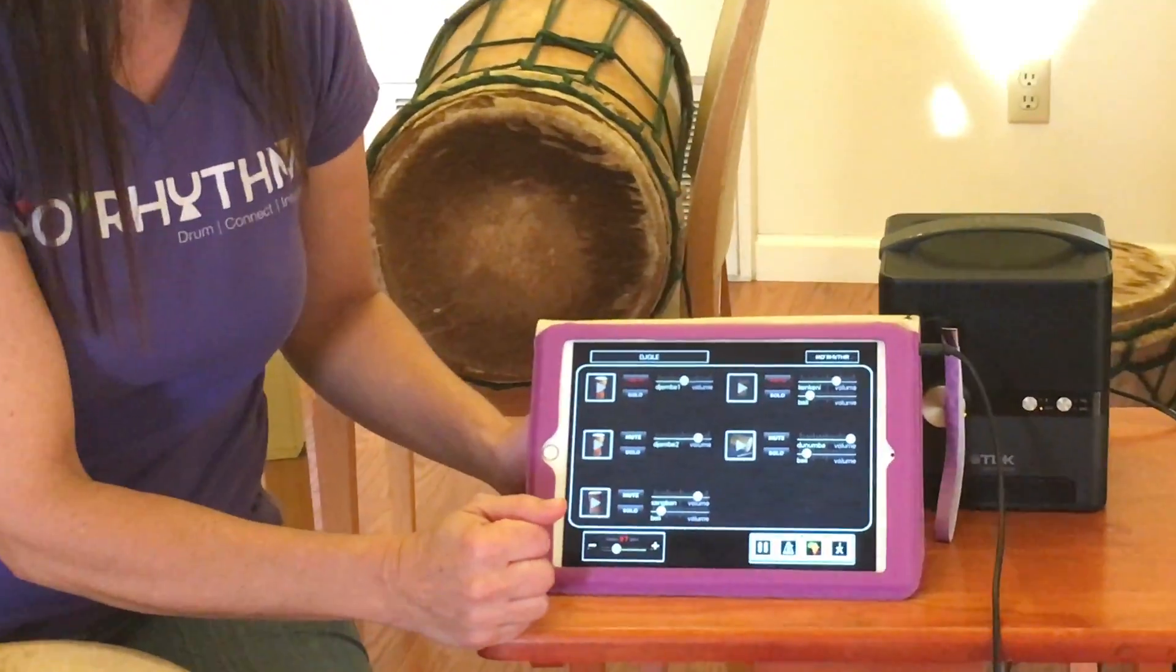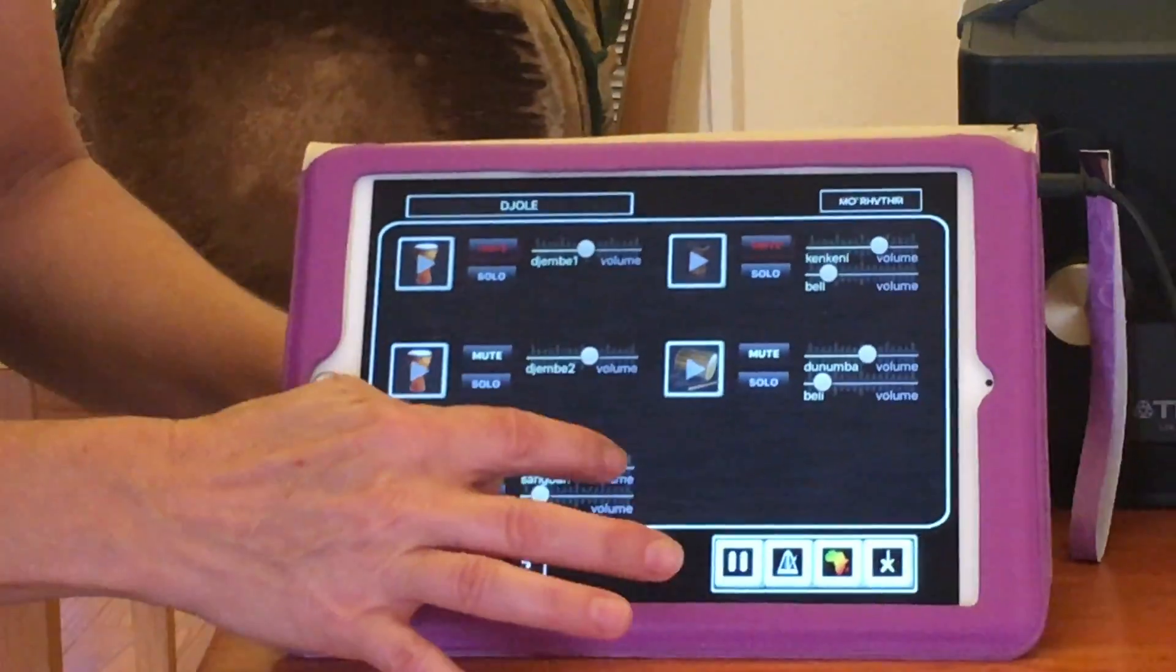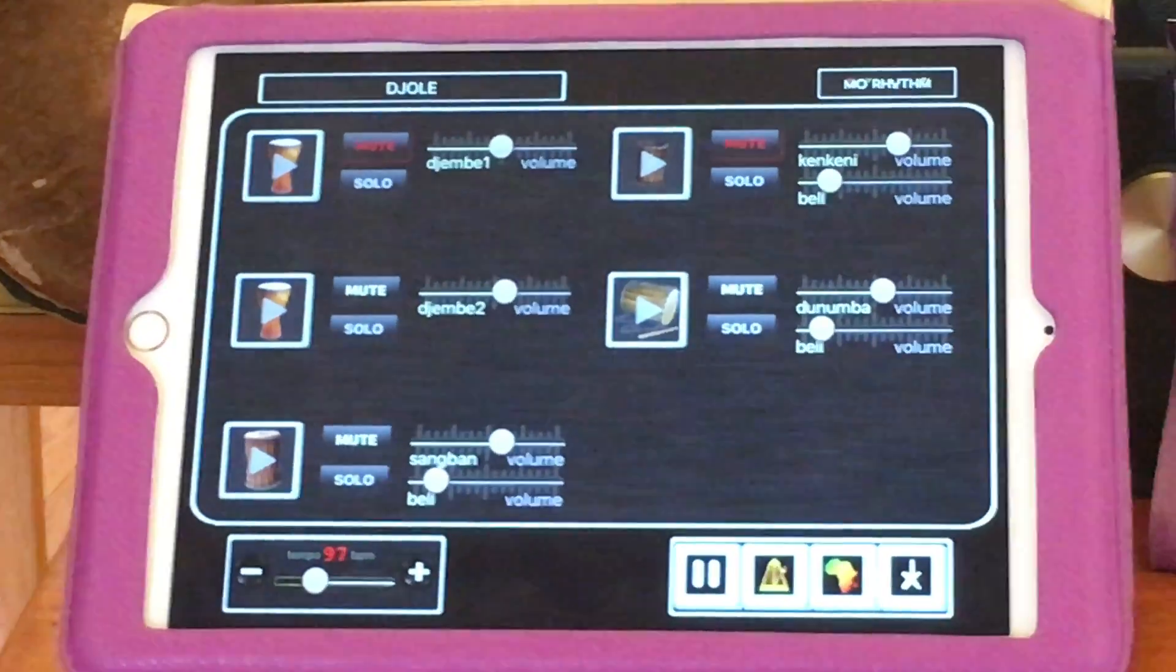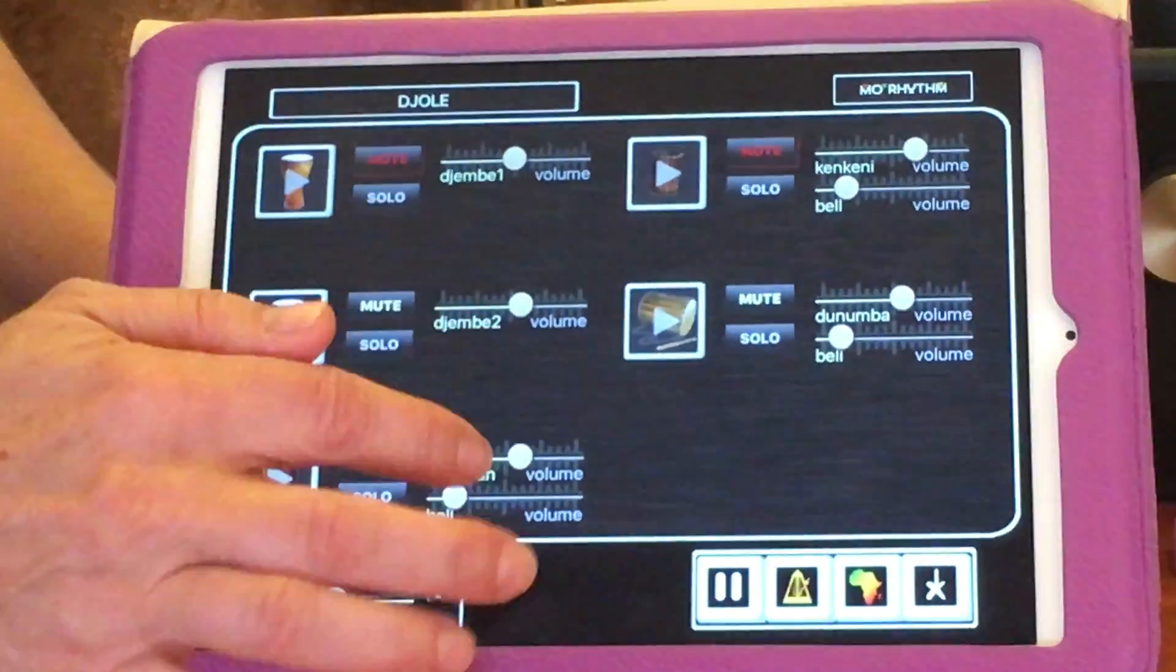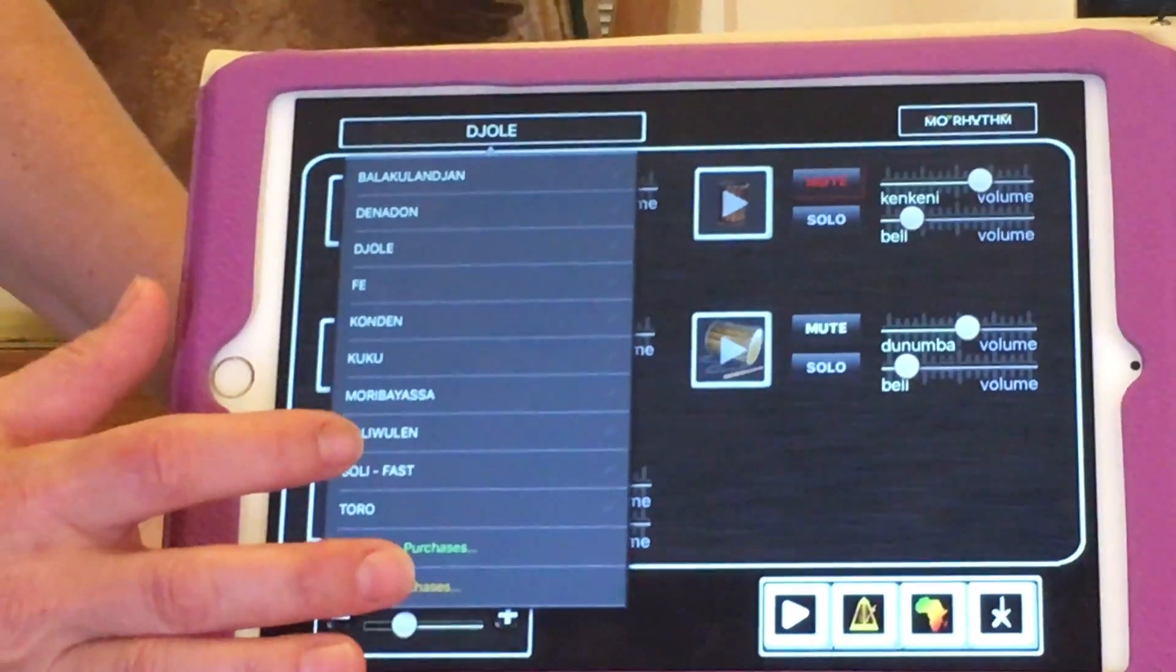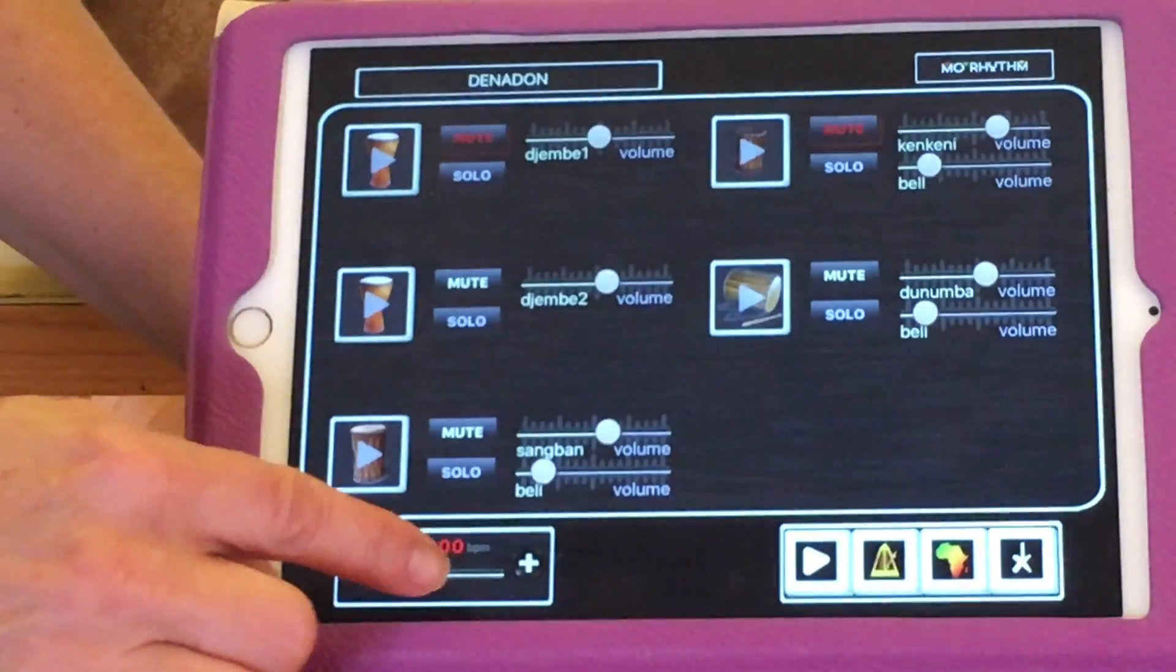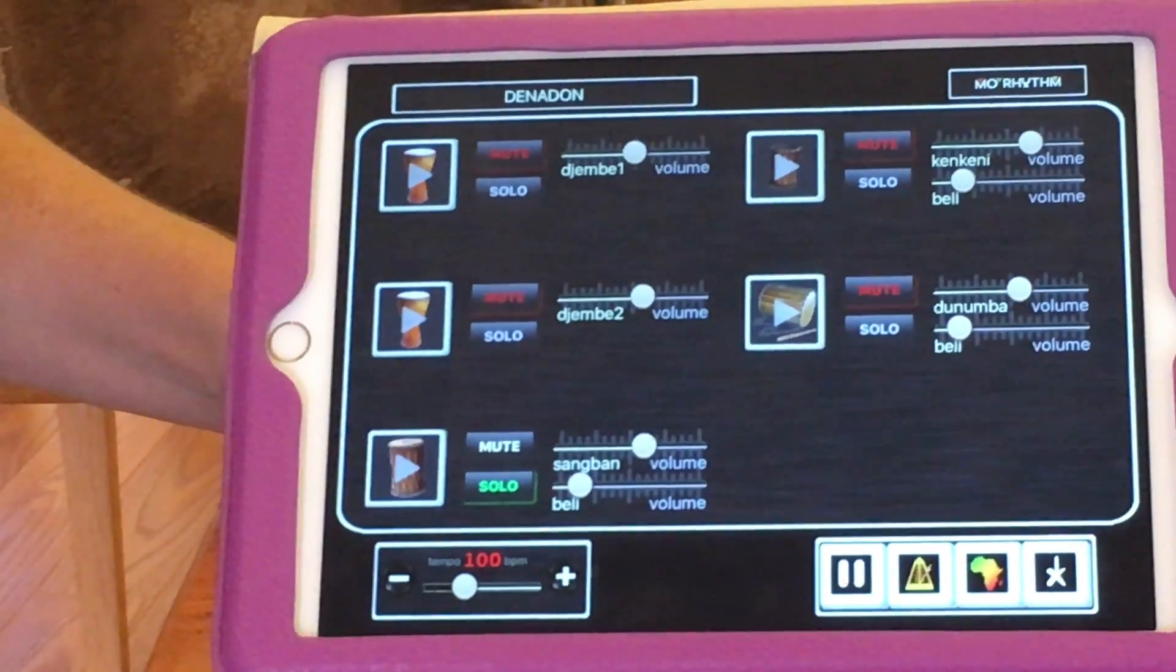The other buttons on the bottom that are for your use, let me get these sounds just a little bit down. Next to the play button is a metronome. So if you need to keep track of time, let's say you want to play, let's switch it to a different rhythm. Let's switch to Denadon. And let's say you just want to practice the sangban part. So you're going to learn the sangban part first. So you're going to solo it. And you want to hear how it relates to that downbeat.